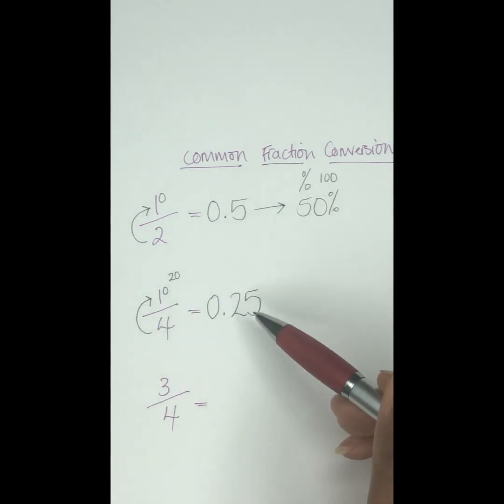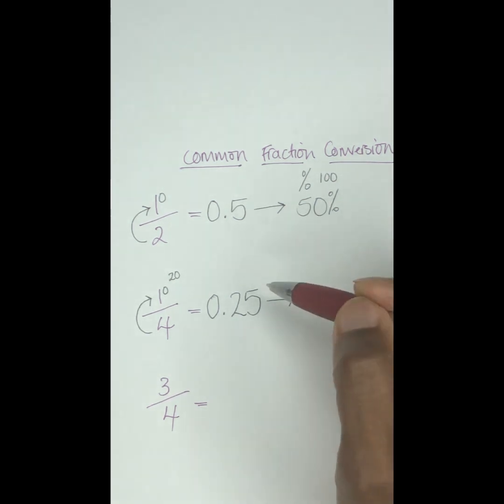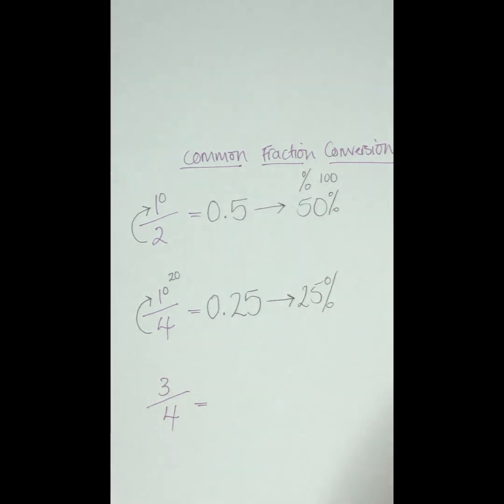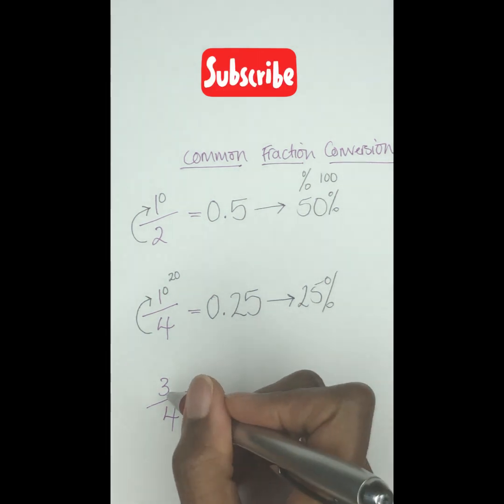So 1/4 works out to be 0.25. And then what is that if we was to convert that to a percentage? So we move your decimal two places to the right, and that's going to give us 25%. Like money as well, a quarter is 25 cents. It's the same theory.